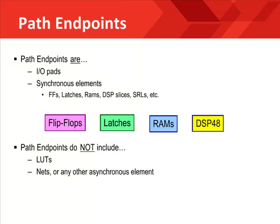Before we introduce you to the global timing constraints and the delay paths they cover, it's very important that you understand the possible path endpoints you can have. Once you understand how the implementation tools look at your design in terms of path endpoints, making the best timing constraints becomes very easy. Simply put, path endpoints are I/O pads and synchronous elements. Synchronous elements can include flip-flops, latches, RAMs, DSP slices, and shift register LUT resources.